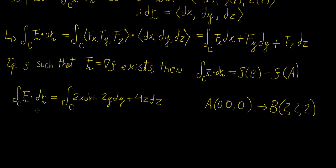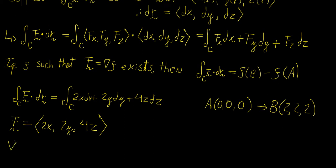We can write this in terms of the vector field, so each component corresponds to the elements of the vector field: 2x, 2y, and 4z. The next step is to show that this vector field is conservative. To do that, we need to prove that the curl of that vector field is equal to zero. Setting up the determinant with i, j, k, and components x, y, z, and 2x, 2y, 4z, the curl evaluates to zero in all components, which proves that this vector field f is indeed conservative.